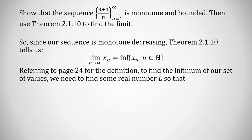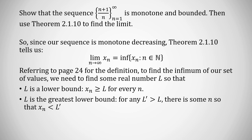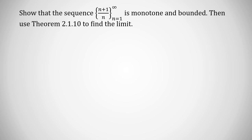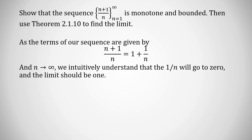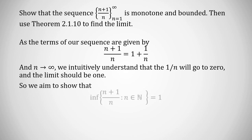The infimum of a set, from page 24, requires finding a real number L that is a lower bound — every x_n ≥ L — and specifically the greatest lower bound: any number L' > L must fail to be a lower bound, meaning some x_n < L'. Looking at our terms: (n+1)/n = 1 + 1/n. Intuitively, as n grows, 1/n shrinks to 0, so 1 + 1/n approaches 1. Our intuitive guess is that the infimum equals 1.